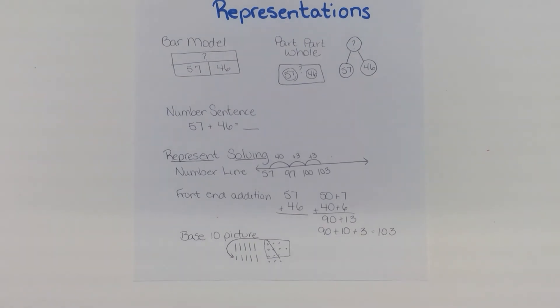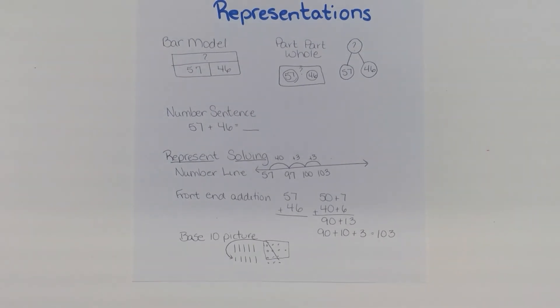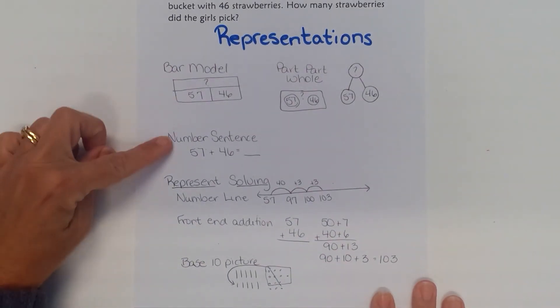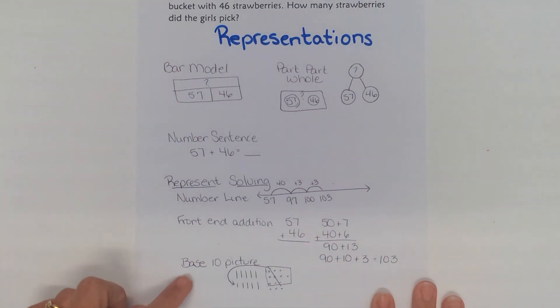I can also represent how I would solve that problem and this is taking back to the TEKS 2.4B where the students are using open number lines, front-end addition, base 10 pictures. At the top part we were looking at representing the story itself but I can also represent how I solve that problem.